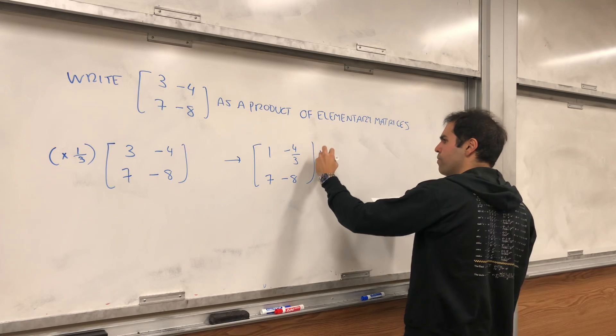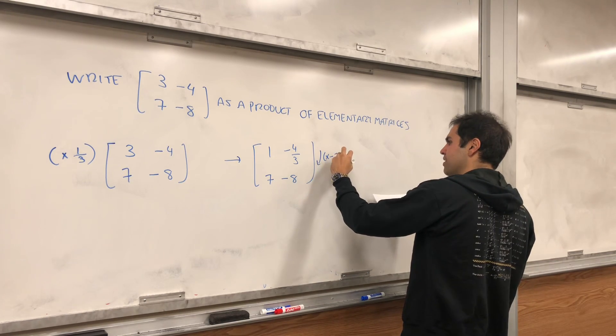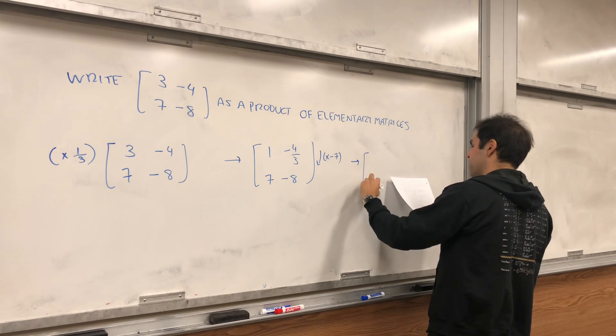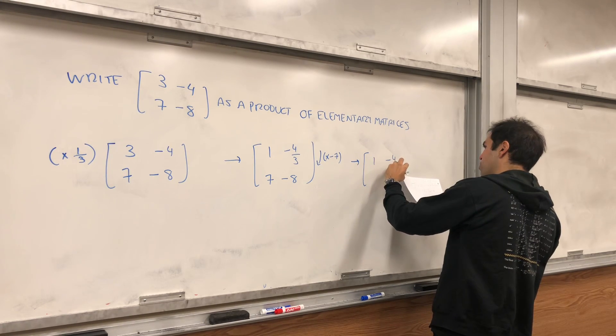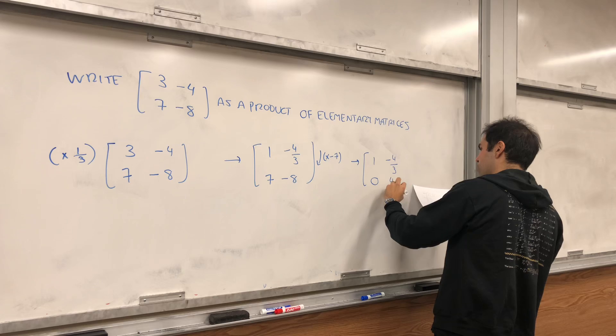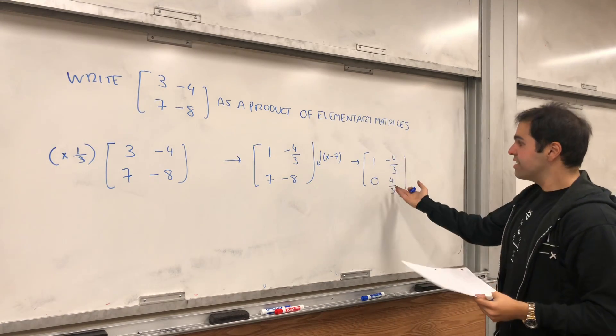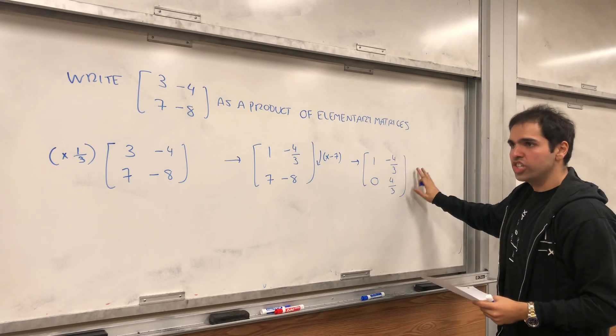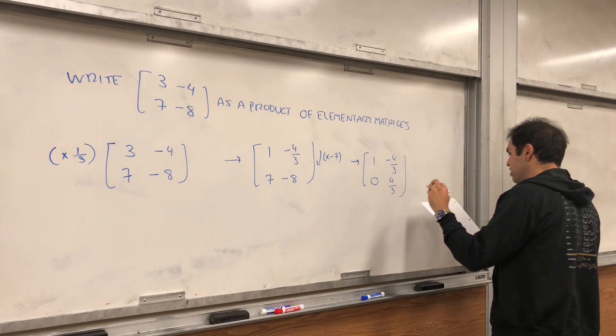Then we want to subtract 7 times the first row from the second row to get 1 minus 4 thirds. Notice this is upper triangular, so for the Lu factorization, that's all you need, but let's continue.